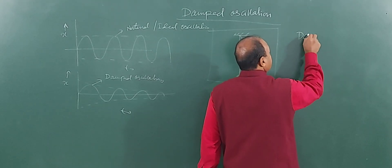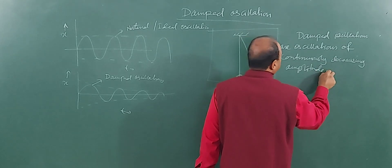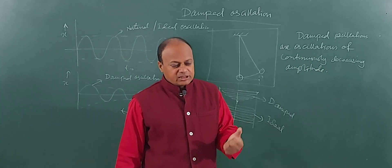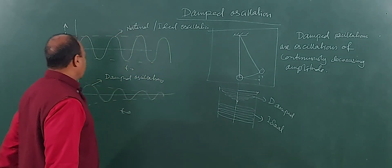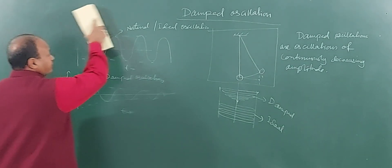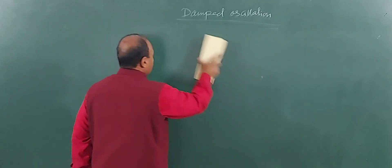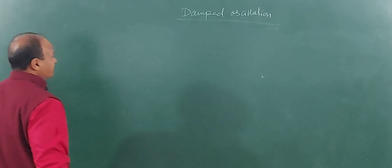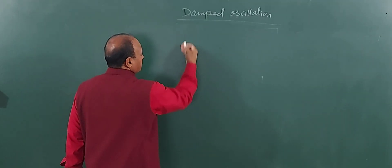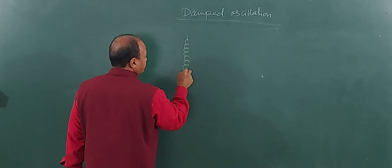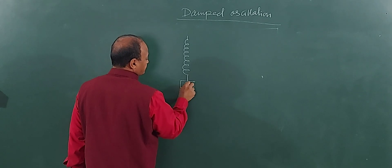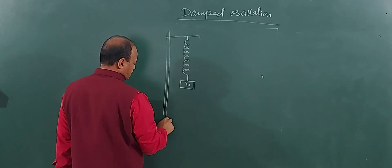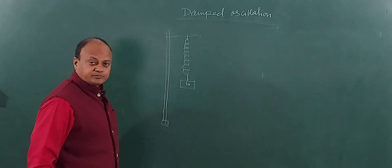So what are damped oscillations? Damped oscillations are oscillations of continuously decreasing amplitude. Now I will discuss what exactly are the forces acting on the body during damping. Let us discuss the case of an oscillating spring to which a mass has been attached. Let us imagine: here we have a spring and a mass mounted on a stand — a clamp stand.